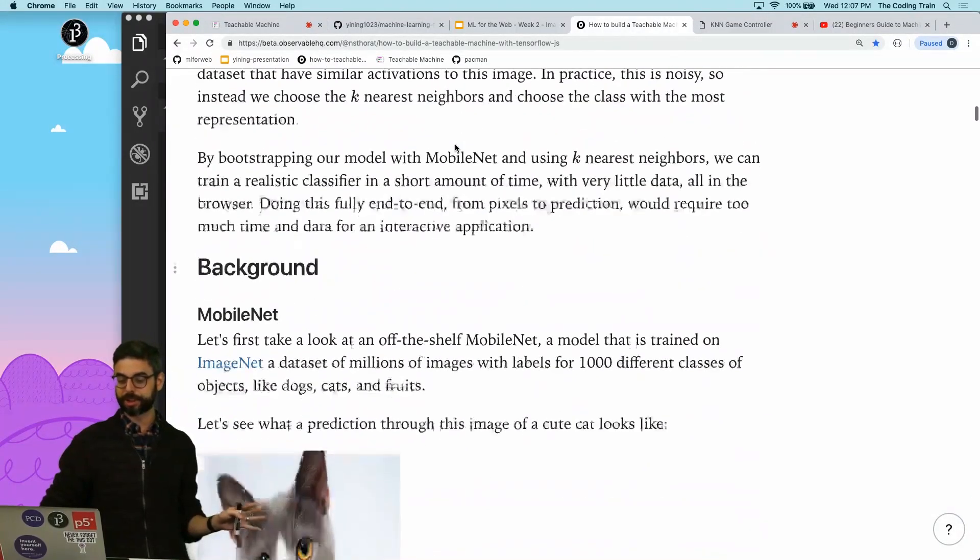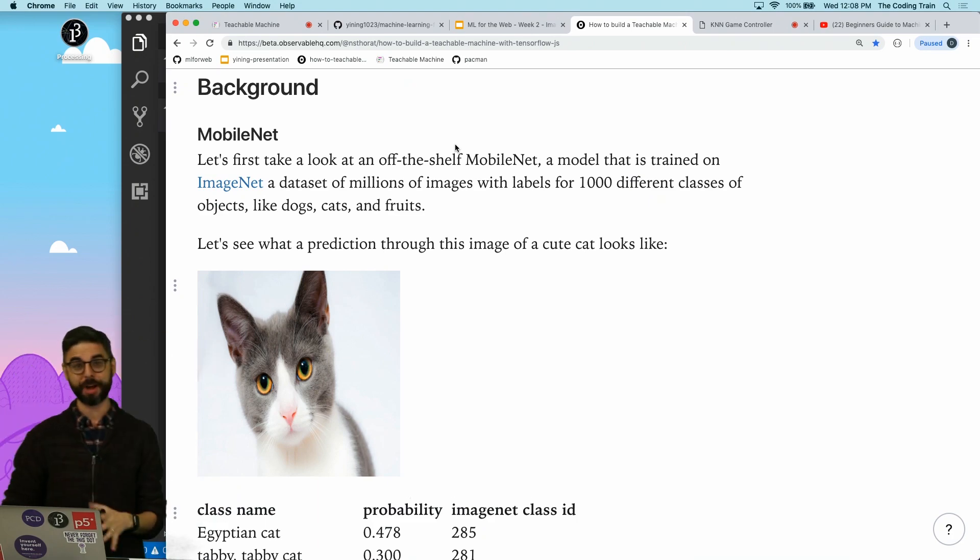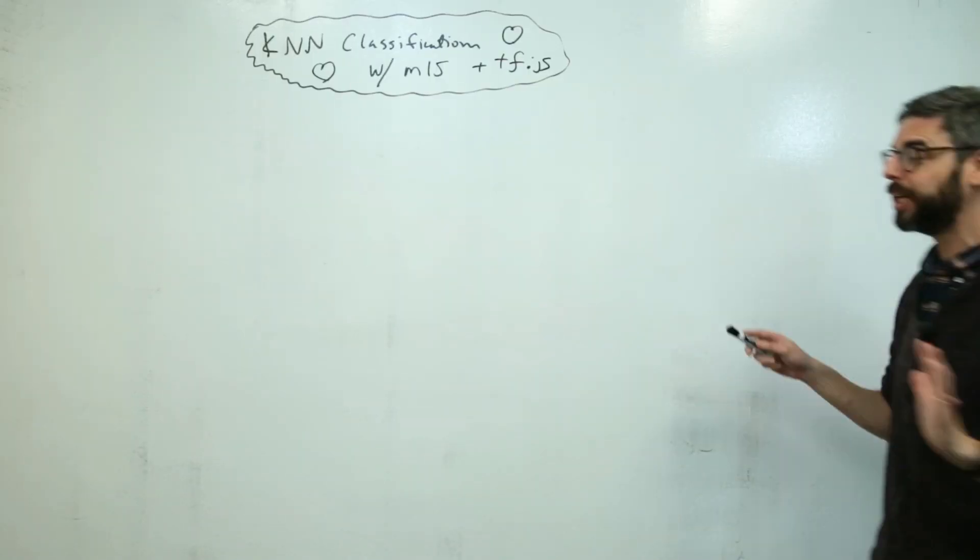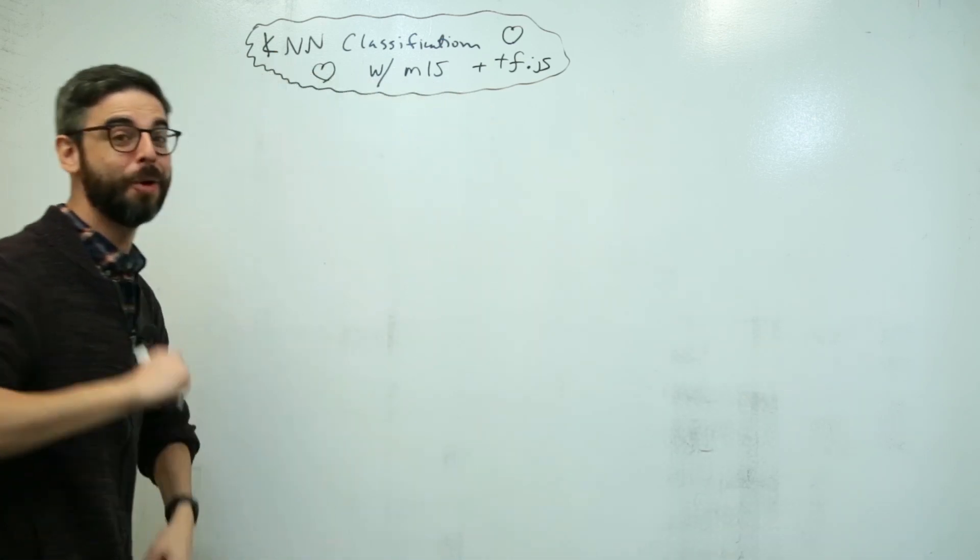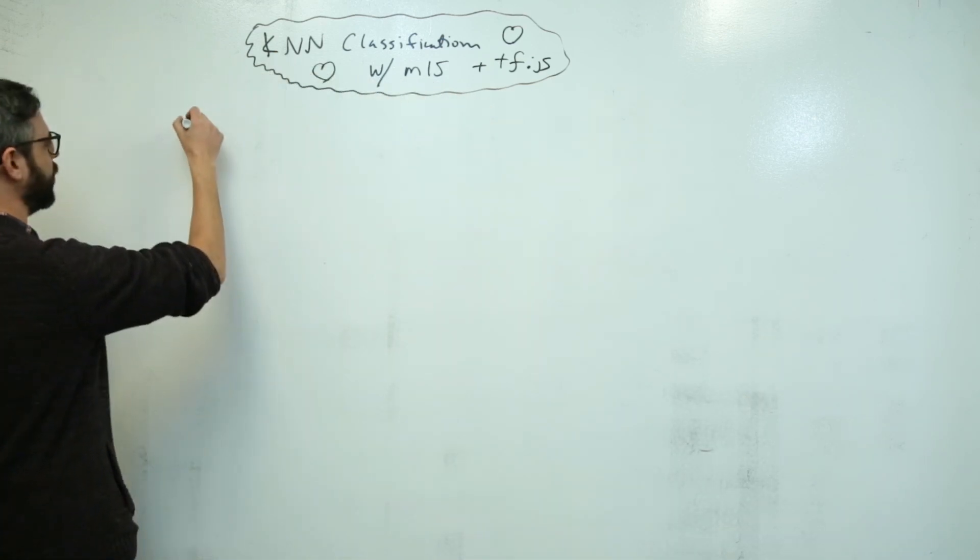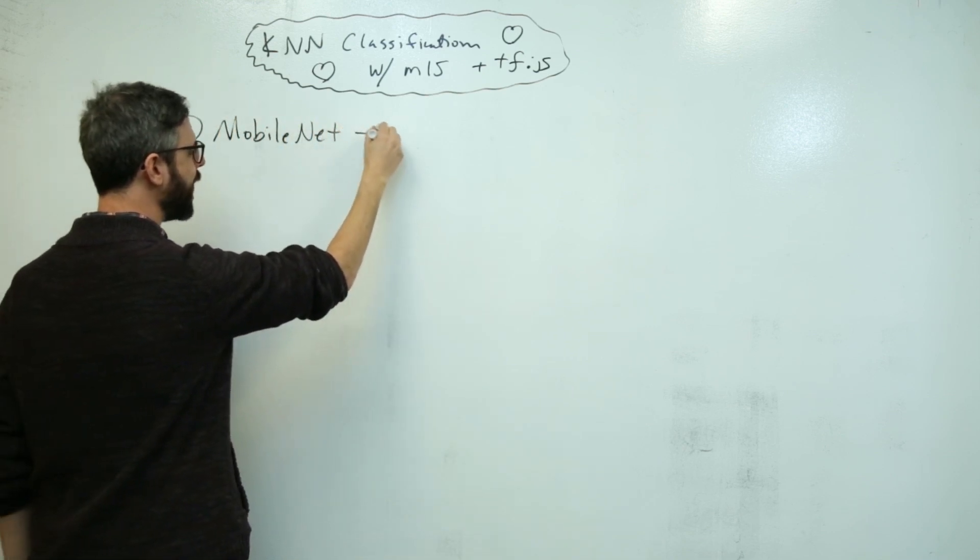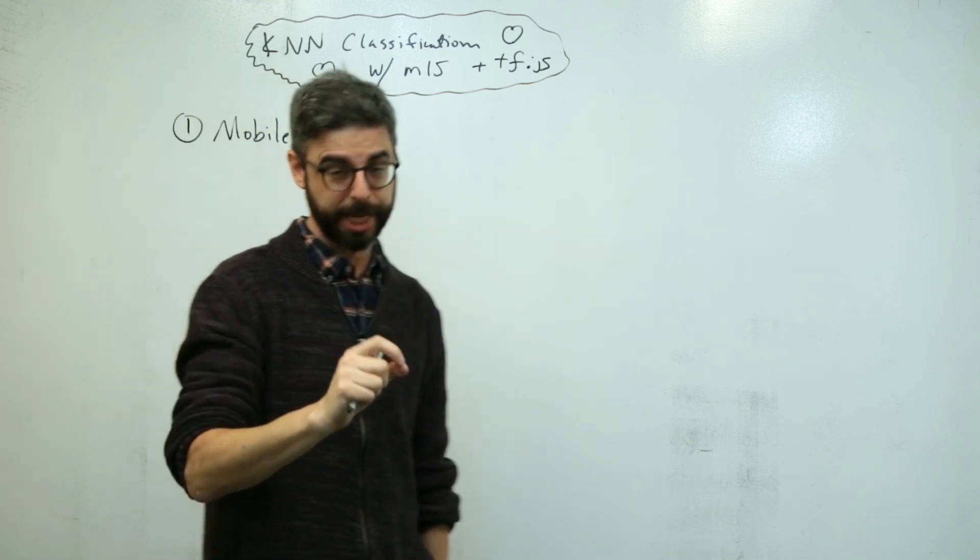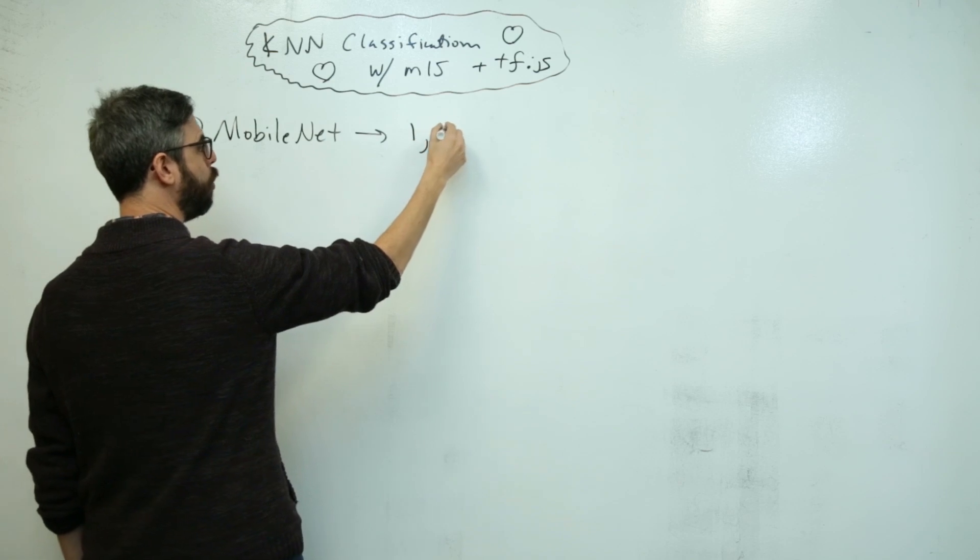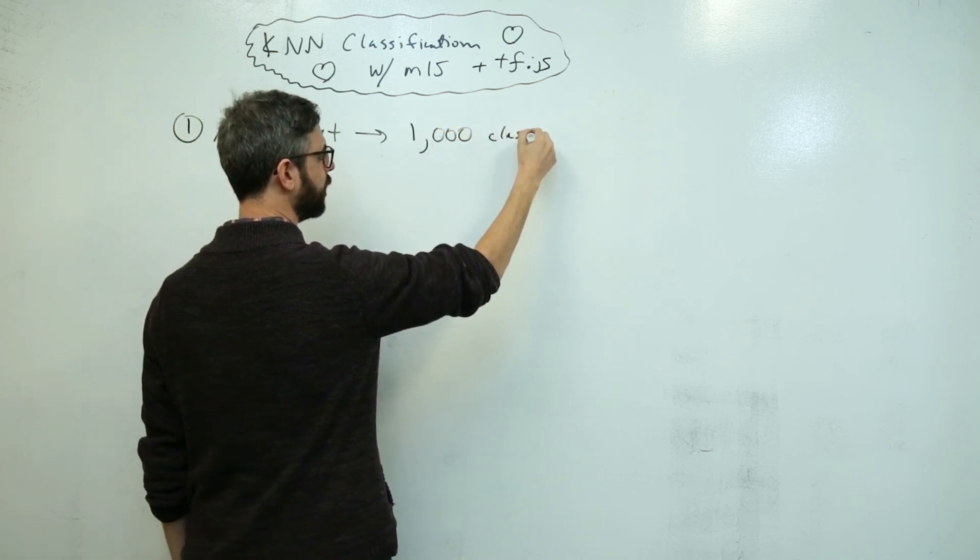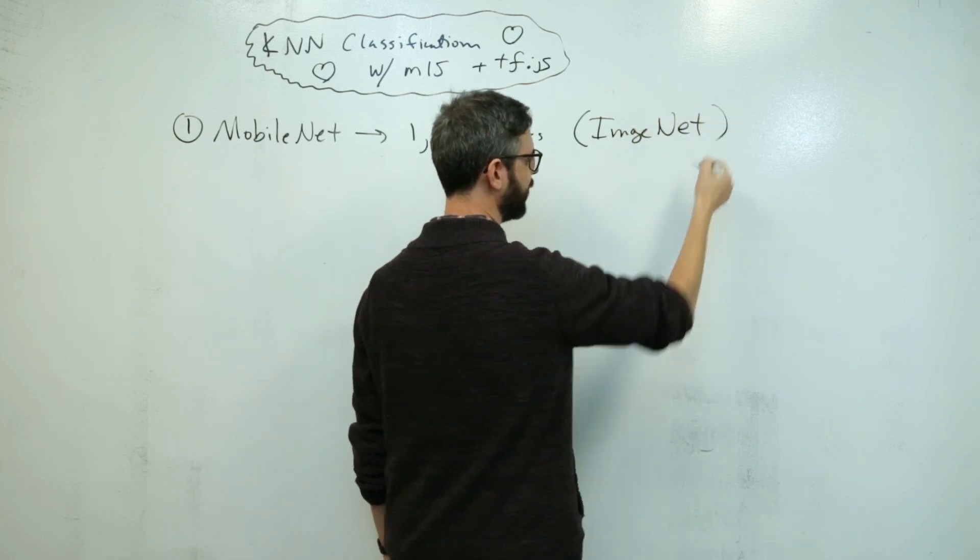This feature is only in the library. You're going to want to make sure you're using at least version 0.2.1 of ML5. The KNN classifier is part of ML5.